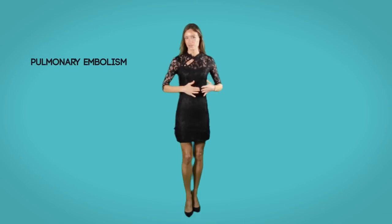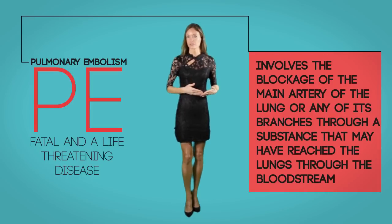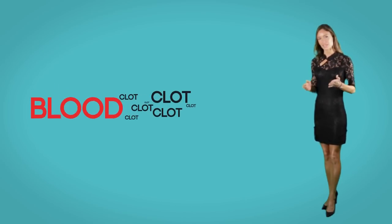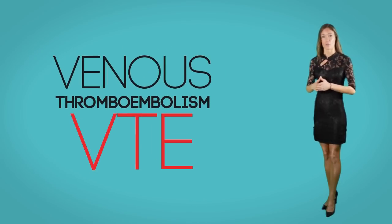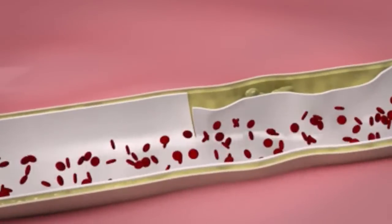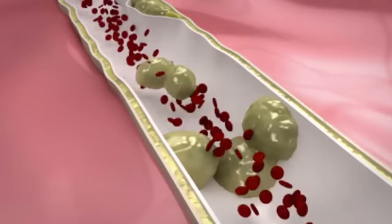Pulmonary embolism, abbreviated as PE, is a life-threatening disease that involves the blockage of the main arteries of the lungs or any of its branches through a substance that may have reached the lungs through the bloodstream. A common reason is a blood clot, which may be large or small, and there may be multiple clots. PE belongs to a group of problems known as venous thromboembolism, abbreviated as VTE. A thrombus becomes an embolism when it detaches and travels through blood flow to get stuck in narrow blood vessels.